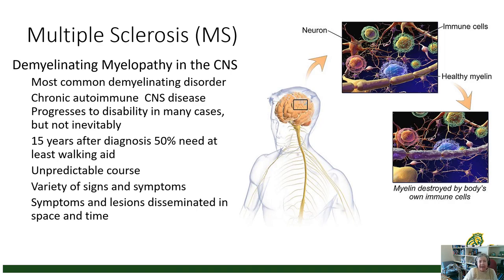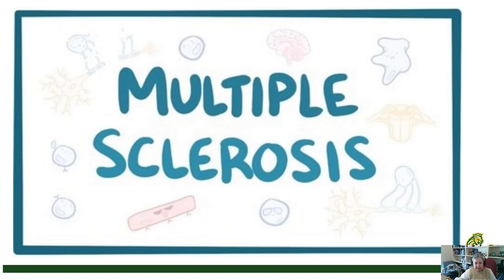MS is a chronic autoimmune disease in which myelin is attacked by immune cells, leading to loss of myelin on heavily myelinated axons, axonal dysfunction, slowing of the transmission of electrical signals, and in some cases loss of the axons eventually, and neuronal loss. In most cases it is progressive to disability, although not everybody with MS ends up significantly disabled. Within about 15 years after diagnosis, about half of those diagnosed need at least some walking aid.